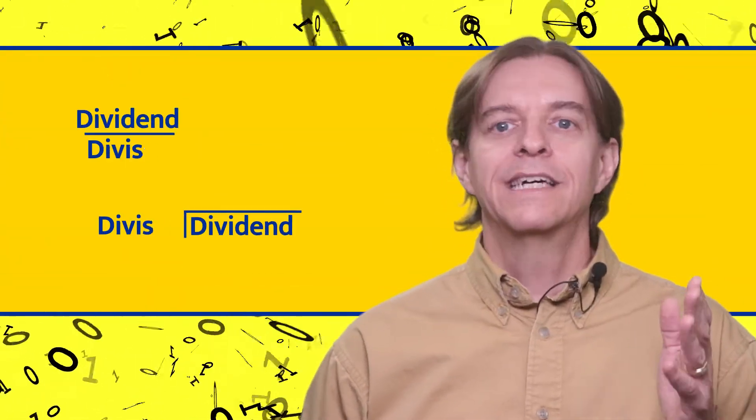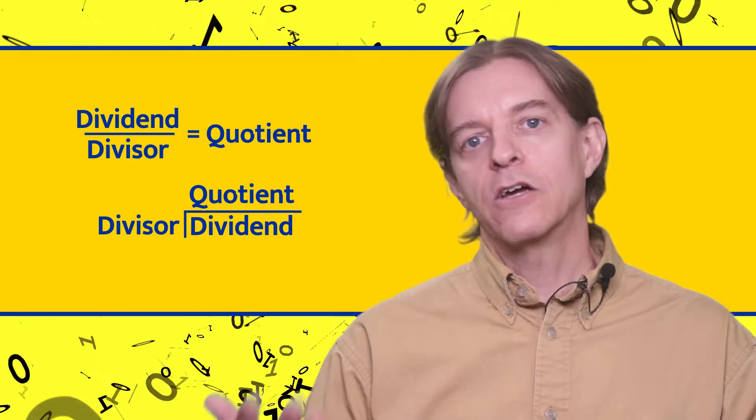First, a refresher for terminology. Division involves dividing a dividend by the divisor and getting a quotient.